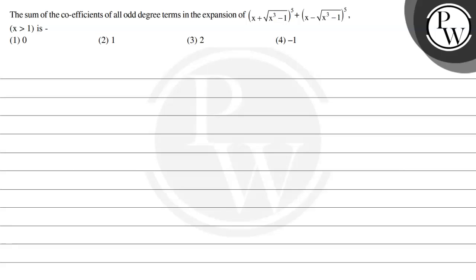Hello. Let's read the given question. The question states that the sum of coefficients of all the odd degree terms in the expansion of (x + √(x³-1))⁵ + (x - √(x³-1))⁵, where x is greater than 1, is: option 1 is 0, option 2 is 1, option 3 is 2, option 4 is minus 1.